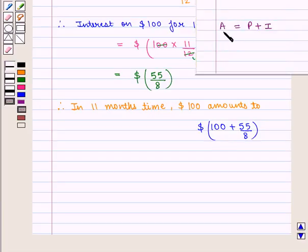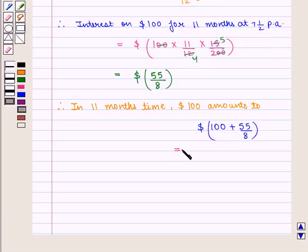As we know, the amount equals principal plus interest. Therefore, it is equal to 855/8 dollars.